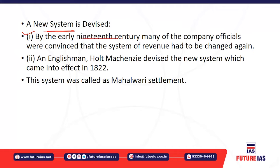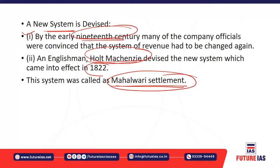By the early 19th century, many company officials were convinced that the Permanent Settlement needed to be changed. So an Englishman called Holt Mackenzie devised a new system known as the Mahalwari system, which came into effect from 1822 onward. After looking into the pros and cons and drawbacks of the Permanent Settlement, they started introducing this new Mahalwari settlement system. Then the Munro system also came, which we will cover next.